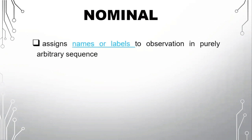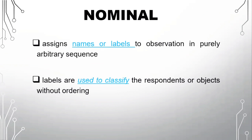The first one is the nominal scale. Nominal scale assigns names or labels to observation in purely arbitrary sequence. The labels are used to classify the respondents or objects without ordering. So in nominal scale, we have nominal data. Nominal scale usually deals only with non-numeric variables. So remember that this scale is used for classifications.